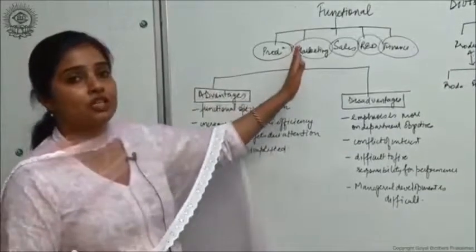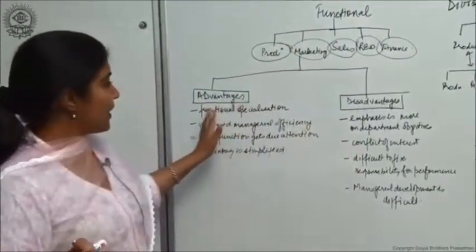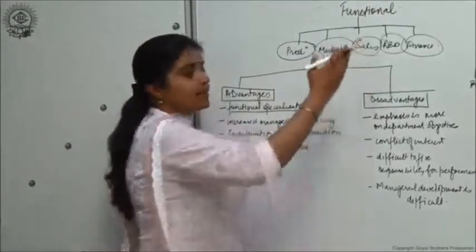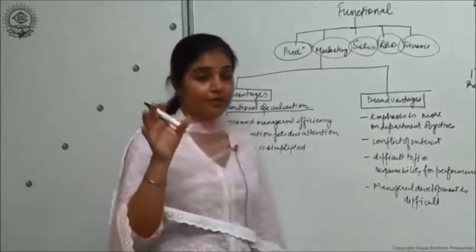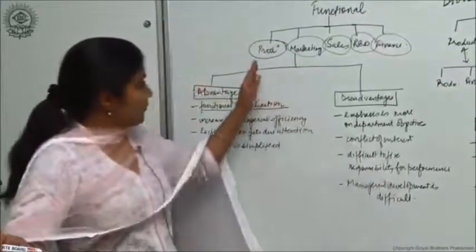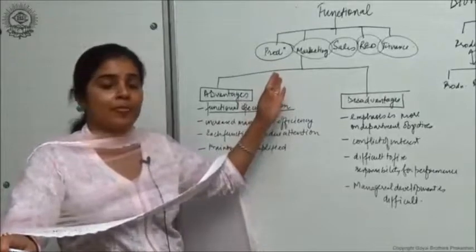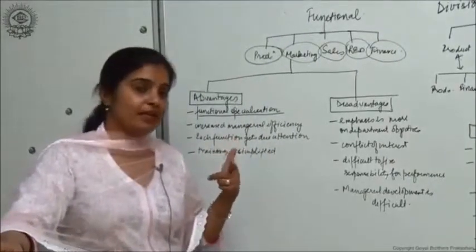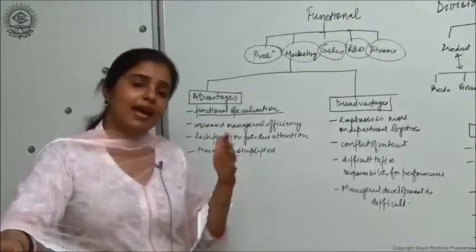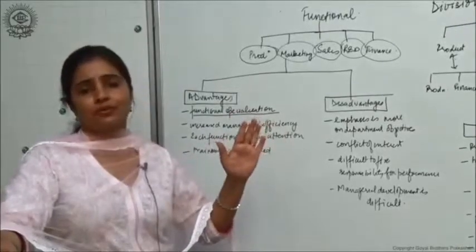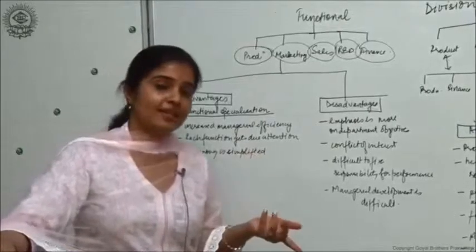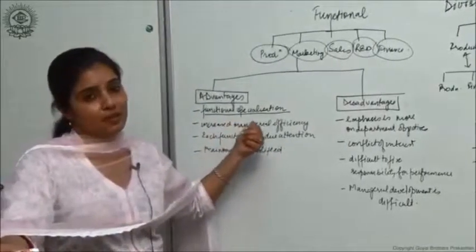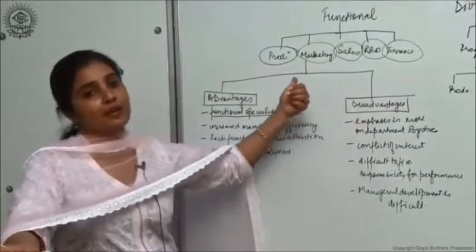There are certain advantages of a functional structure. The first and foremost advantage is functional specialization. Since these five different functions operate as different departments, each department performs only the activities related to its function. By repeatedly performing those same activities, employees become experts in that particular area. As a result, activities under any particular department are performed in the most effective and efficient manner.